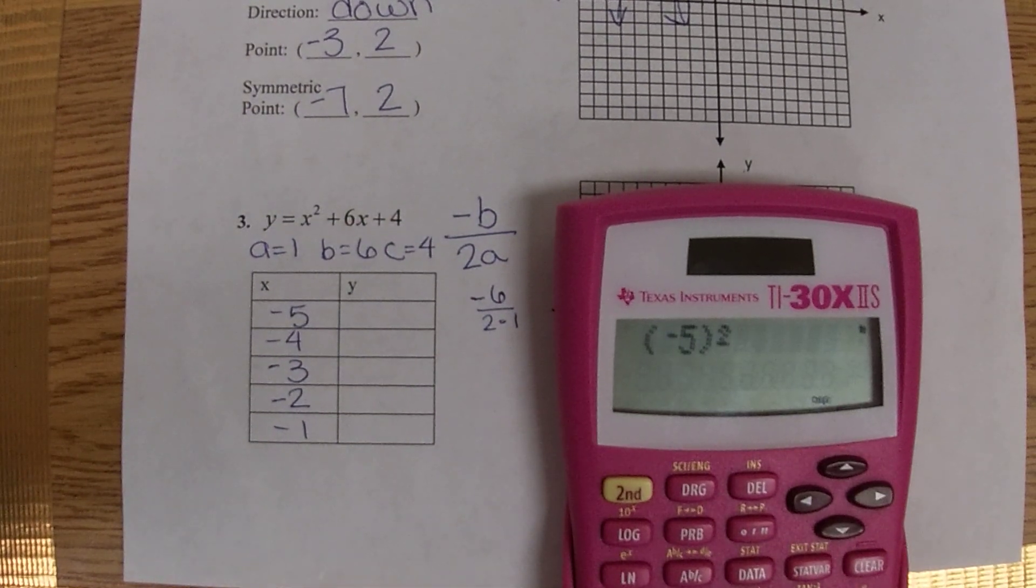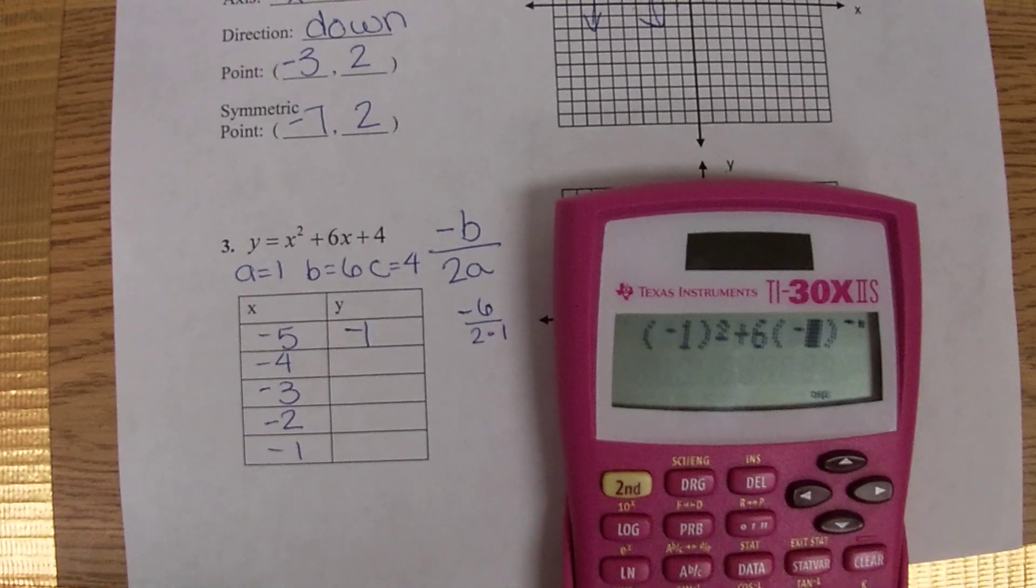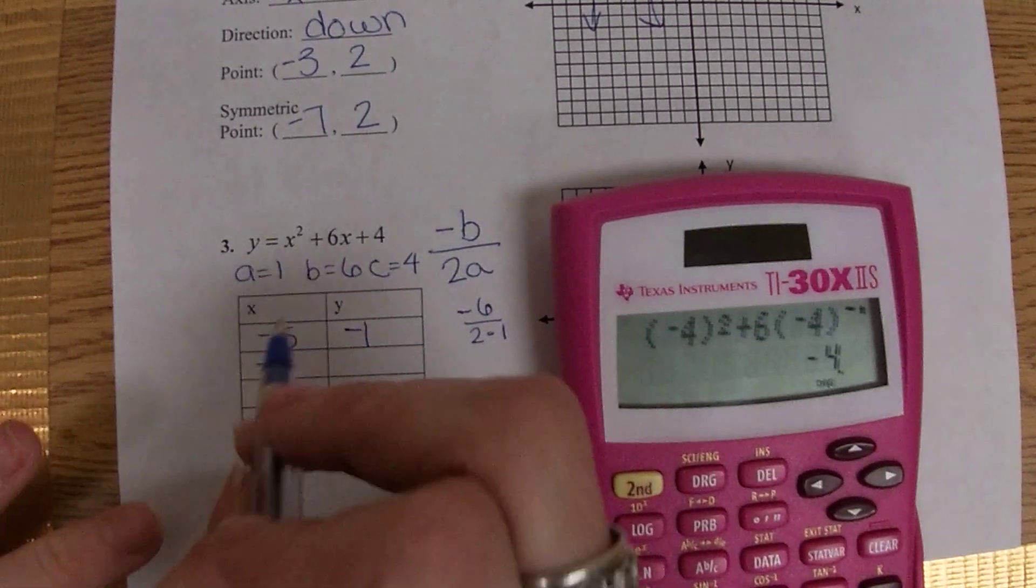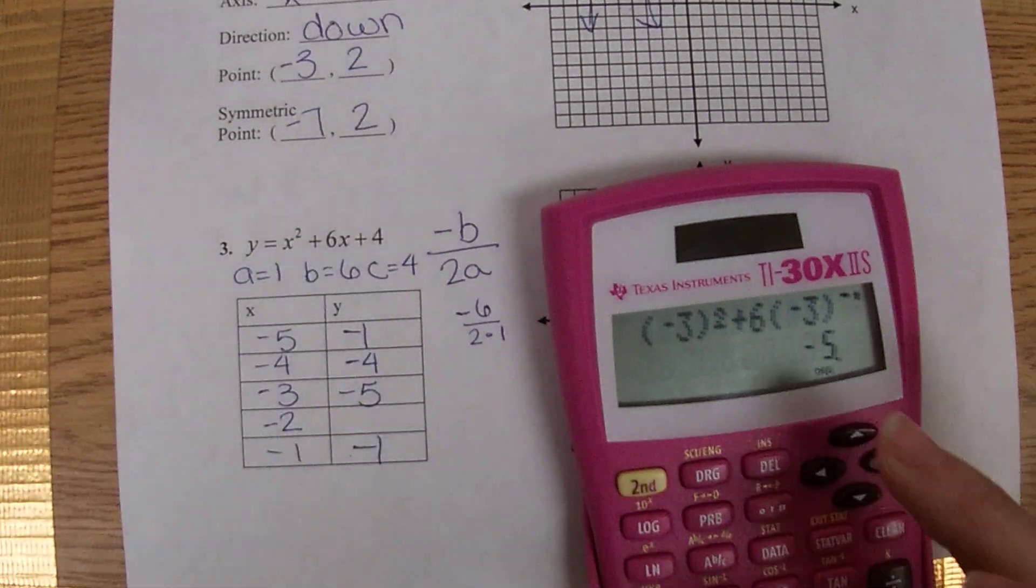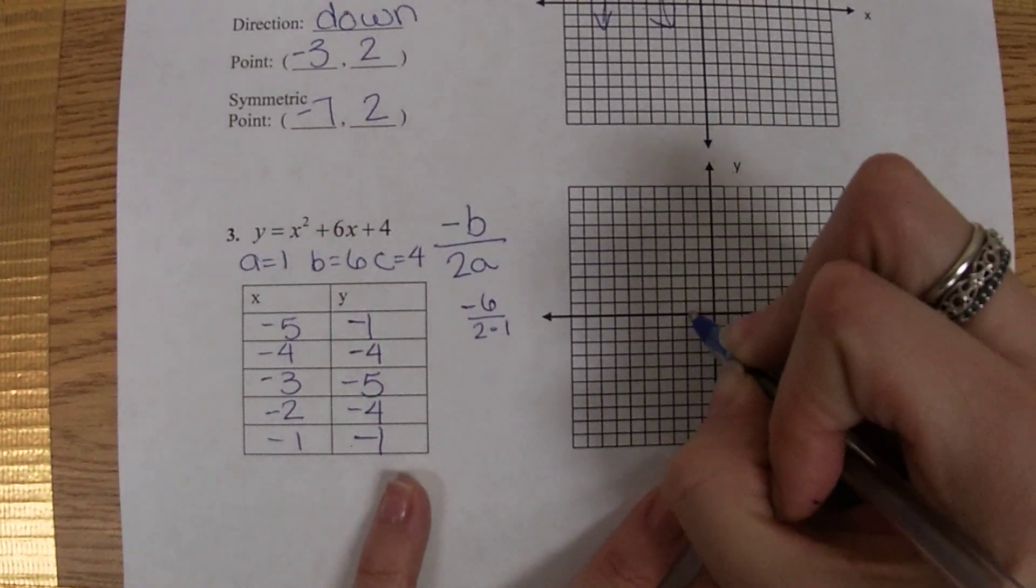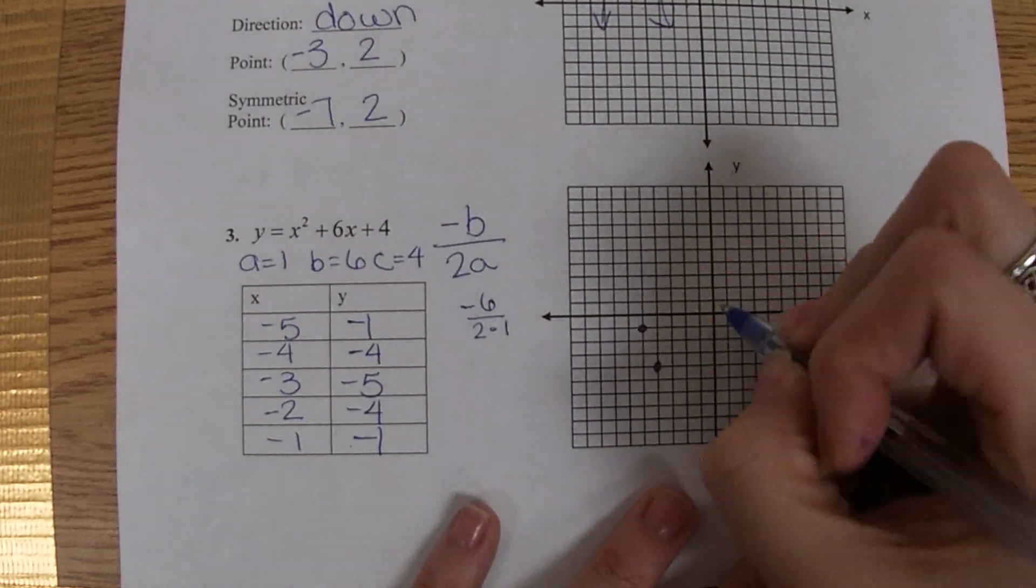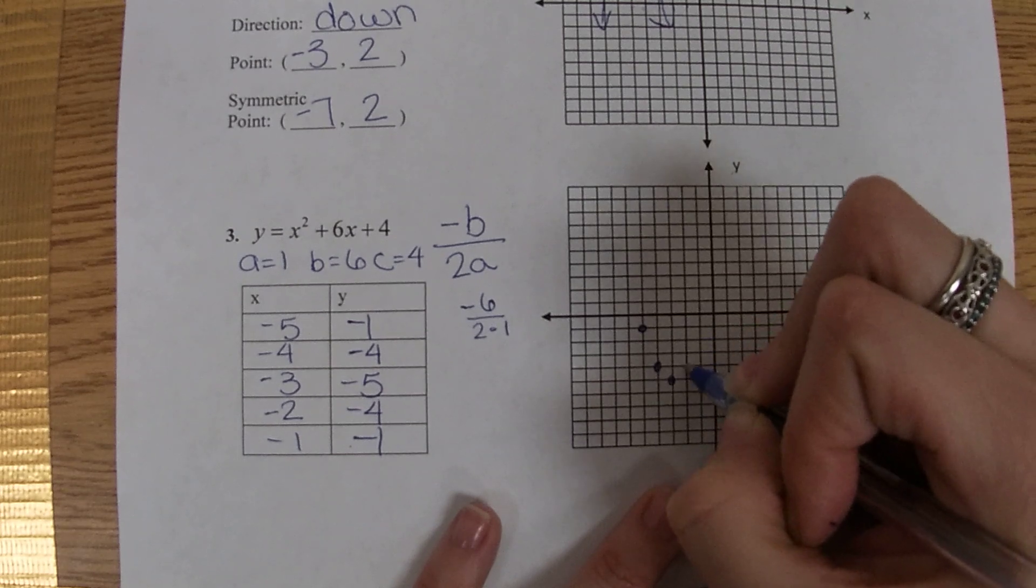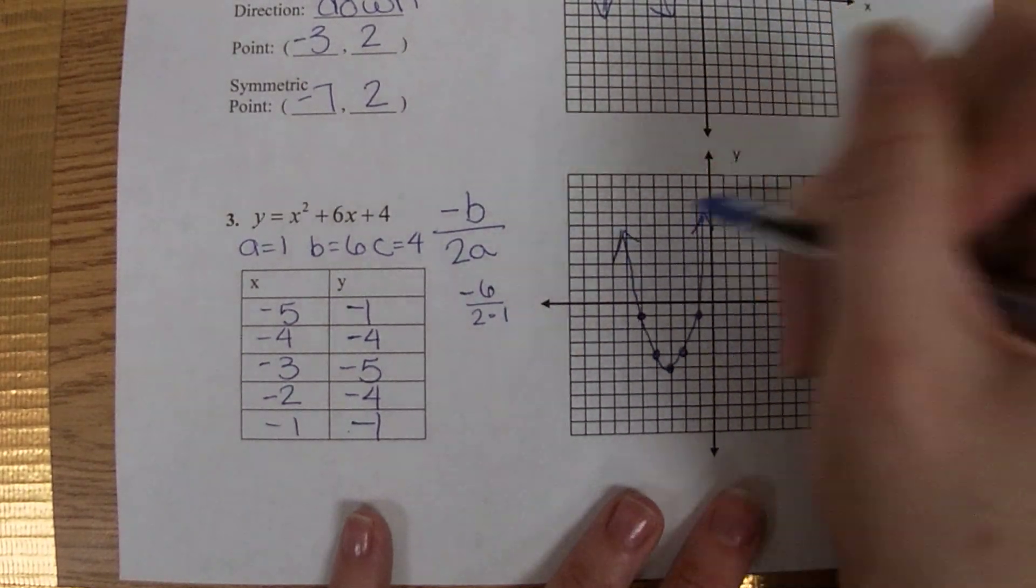So negative five squared plus six times negative five plus four. I'm going to go ahead and check the negative one to make sure I'm right. That's good, those should be the same outputs. So our negative four gives us a negative four. Negative three gives us a negative five. Negative two should give us a negative four, but let's double check. We're good. So we'll plot these points: negative five negative one, negative one negative one. All I'm doing is plotting these five points, and there is our parabola.